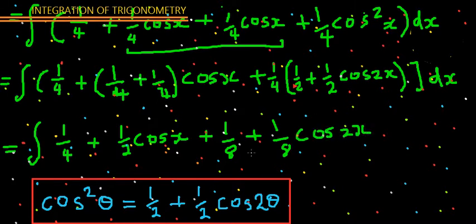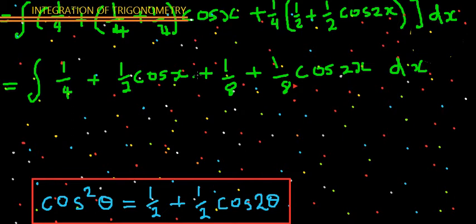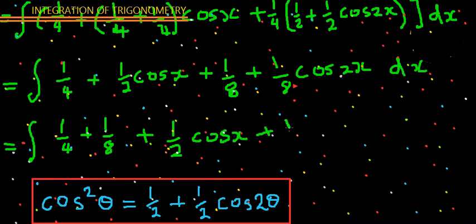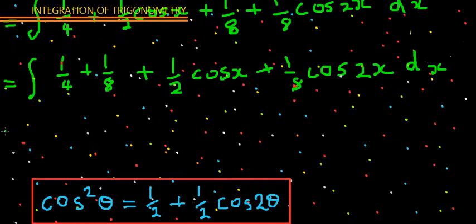From this stage you can integrate. We can try to add the one-over-eight with the one-over-four term, but you cannot add them because one involves 2x and the other involves x — they are not the same angle. So if it was the same angle you could add them, but since the angles differ, you leave them separate.